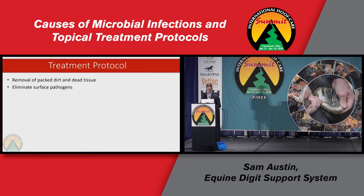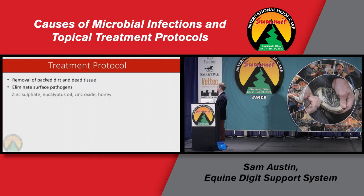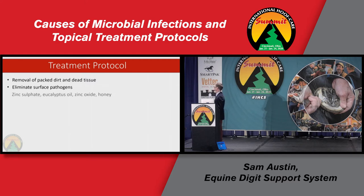You want to eliminate the surface microbes — or at least the negative ones — with a do-no-harm type of ingredient. Good active ingredients to use would be zinc sulfate, eucalyptus oil, and other essential oils, but selectively — do some research first, because some like tea tree can be too aggressive. Zinc oxide is very effective, especially on anaerobic microbes. And honey — simple, effective, natural — but very aggressive towards anaerobic microbes.